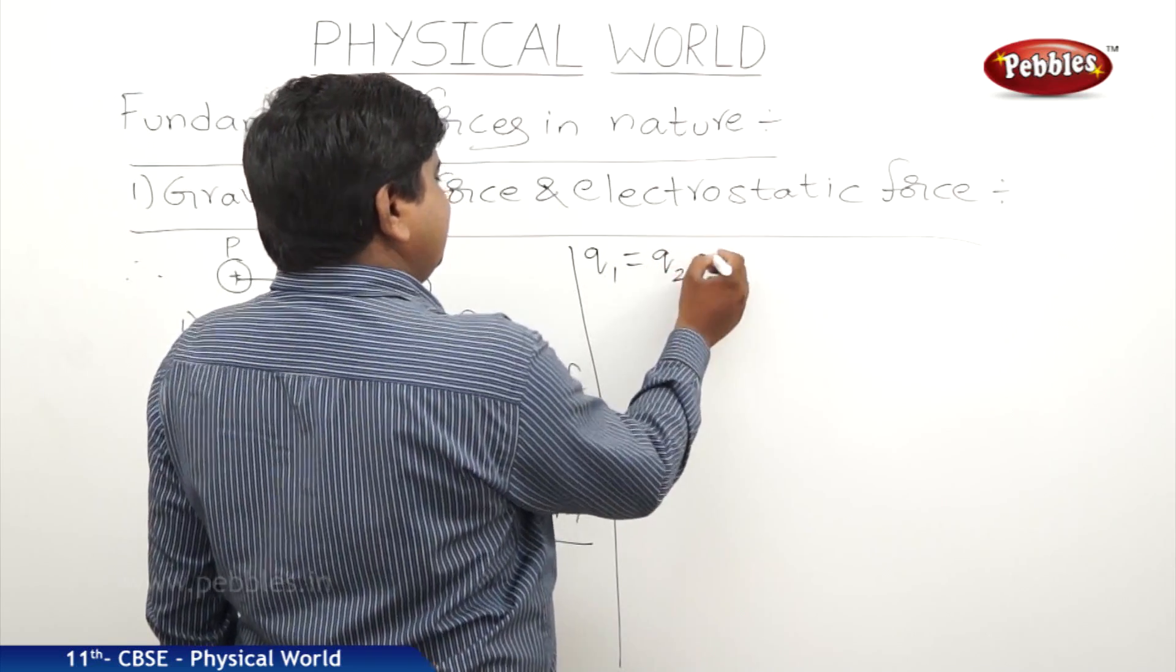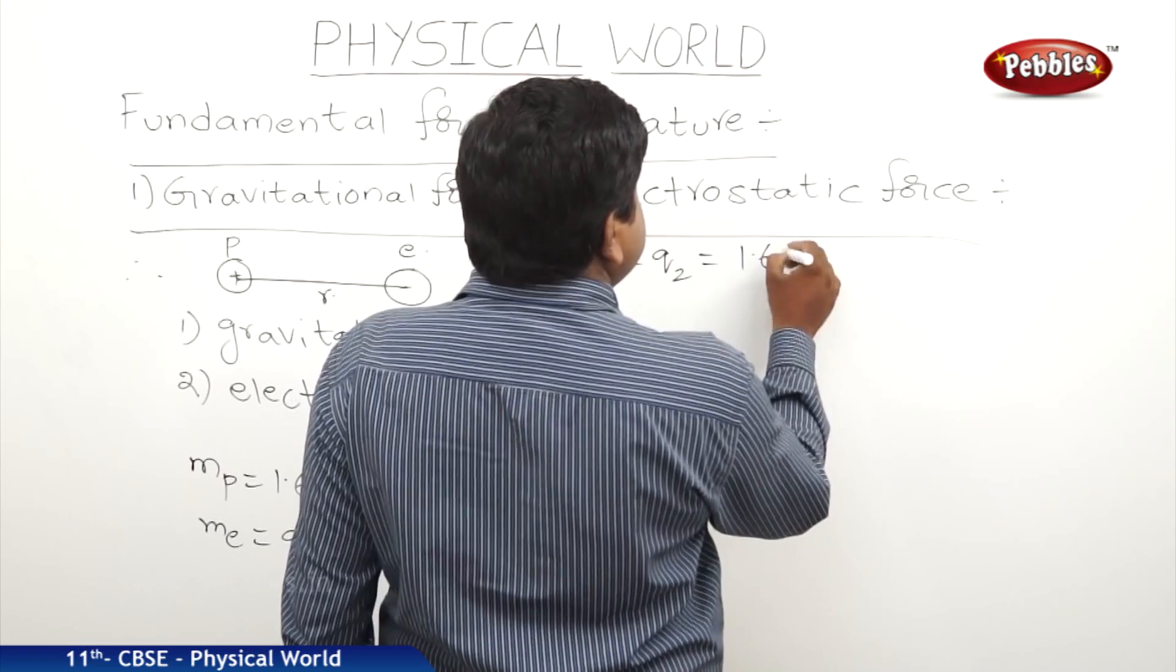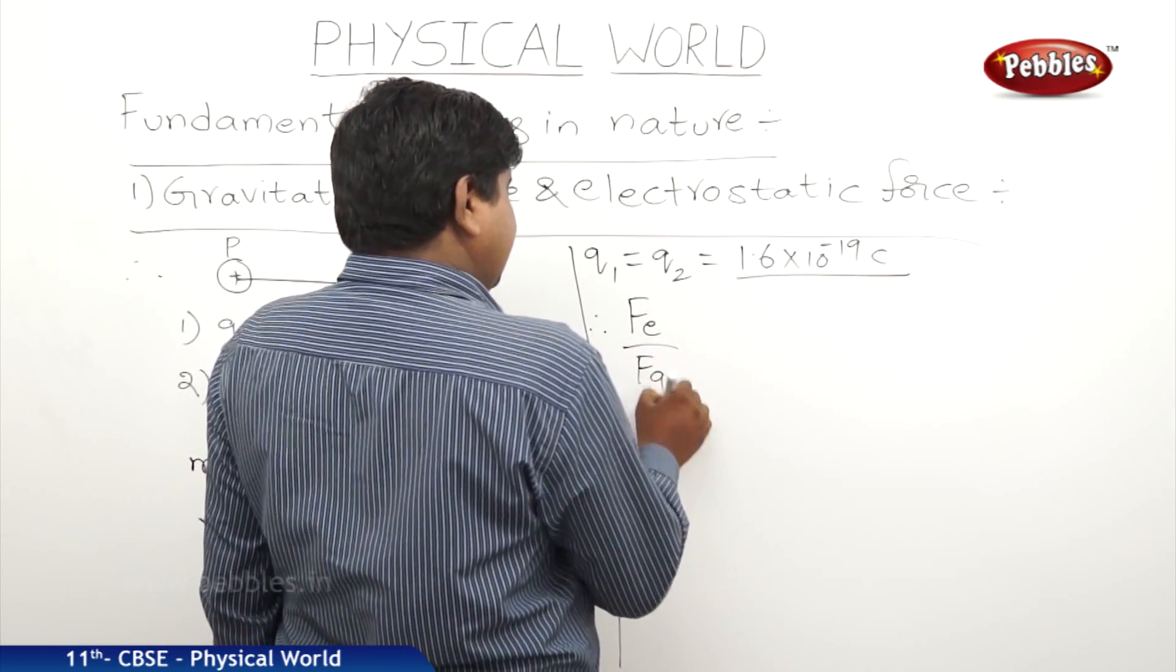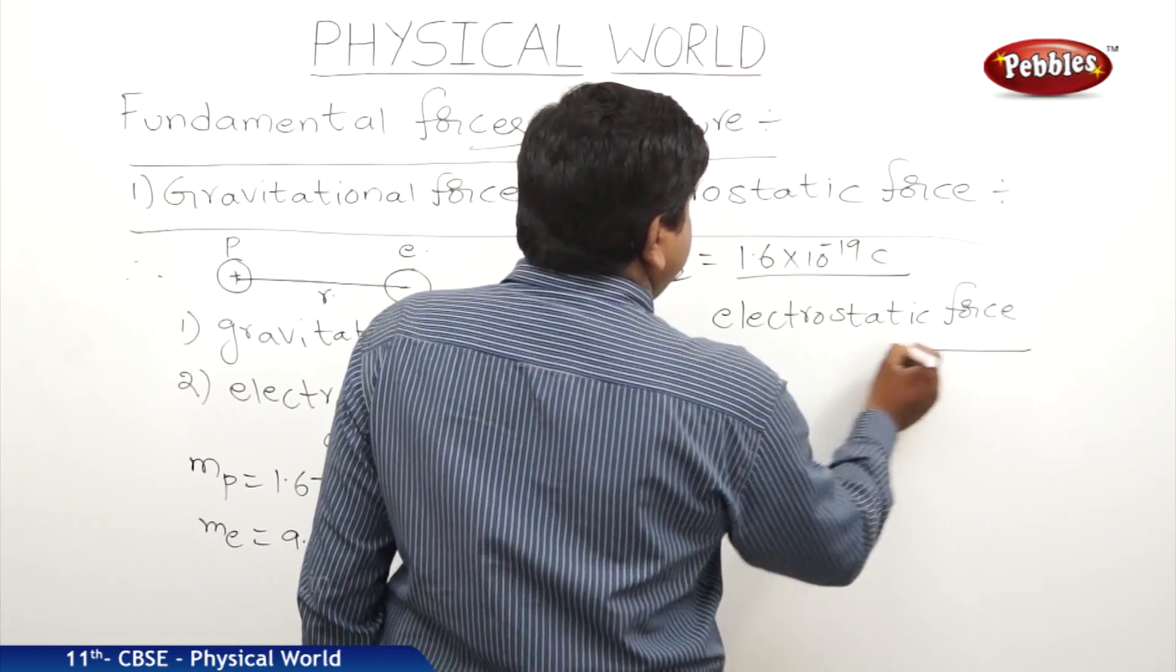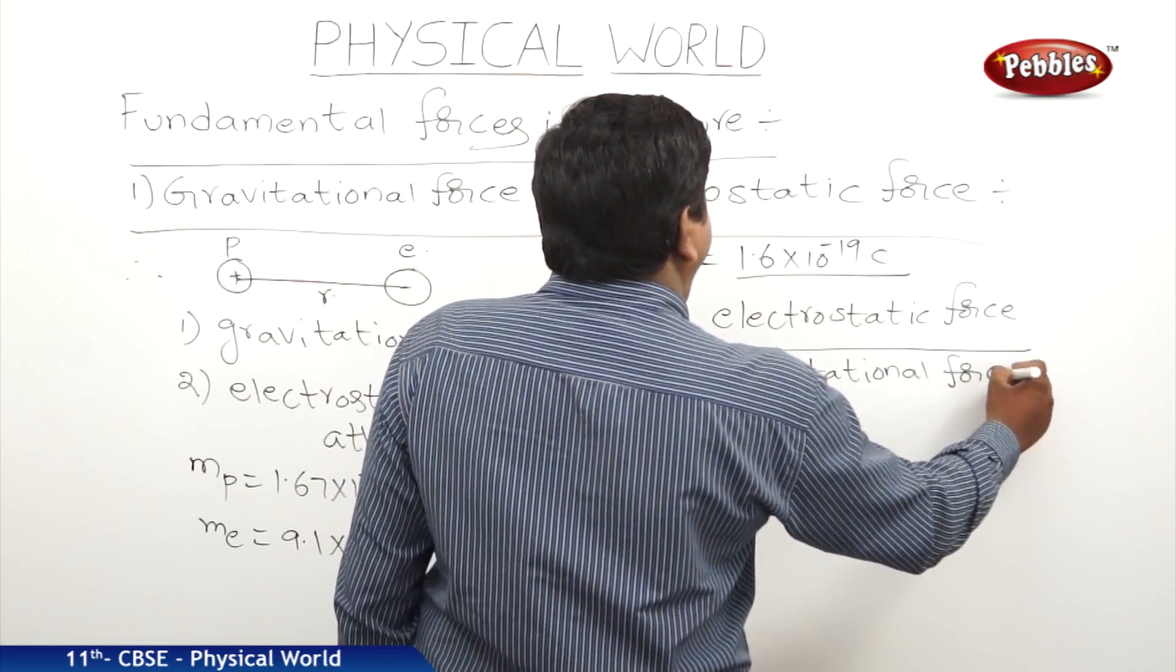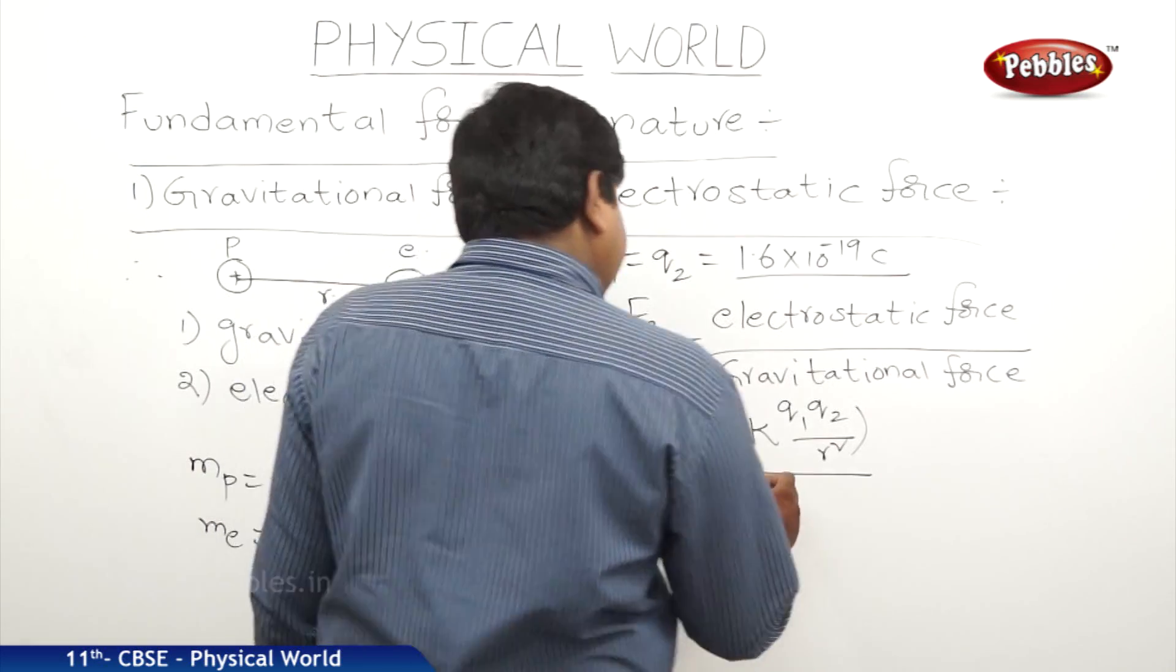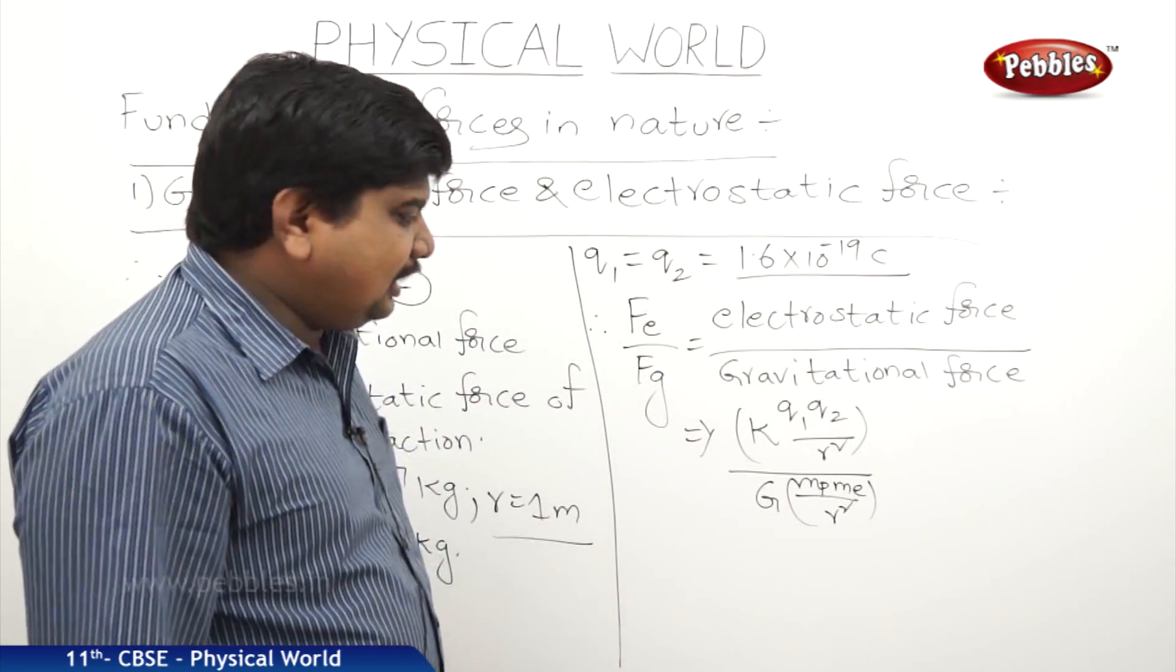Q1 and Q2 are nothing but the charge or magnitude of the charges of two charges. Whether it is a positive charge or negative charge, its magnitude is 1.6 into 10 to the power of minus 19 Coulomb. Now we are finding Fe by Fg, nothing but electrostatic force by gravitational force. The electrostatic force equation is K into Q1 Q2 by R square whole divided by the gravitational force equation G into MP ME by R square.